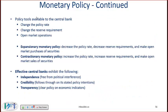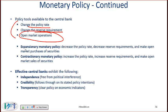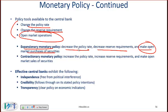The tools available to the central bank are shown here. They can change the policy rate, they can change the reserve requirement, and the biggest one — done most often — is open market operations, which is the method used to control money supply. By controlling money supply, the central bank controls interest rates. In an expansionary monetary policy, the central bank decreases the policy rate or decreases the reserve requirement, and makes open market purchases of securities, which automatically increases the money supply and decreases the policy rate.